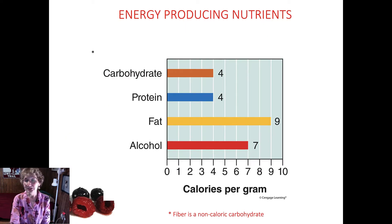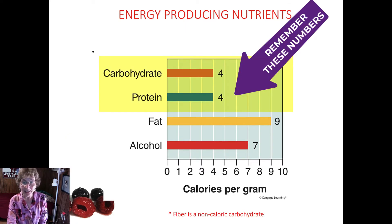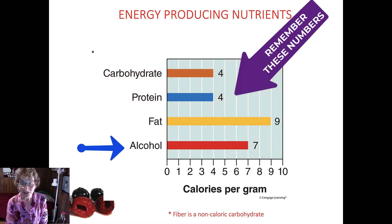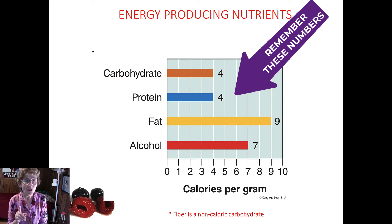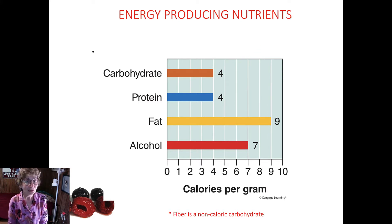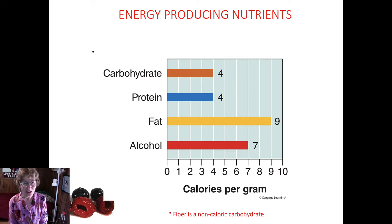Carbohydrates and proteins give us four calories per gram. Fat is nine calories per gram. Alcohol is seven calories per gram. Alcohol was not on the previous slide because alcohol is not an essential nutrient. So if you are experiencing symptoms when you don't consume alcohol, it's not because it's essential — it's because you're an alcoholic. Talk to somebody.